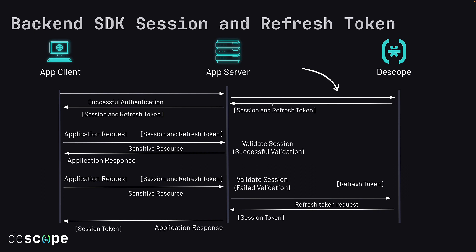This could contain multiple steps, such as verification of an OTP, magic link, or any other authentication method. After successful authentication, the session and refresh token are returned from the Descope service. You can choose to return the session and refresh token to your application client — this is the most common method — but there are also options to store them on your application server.